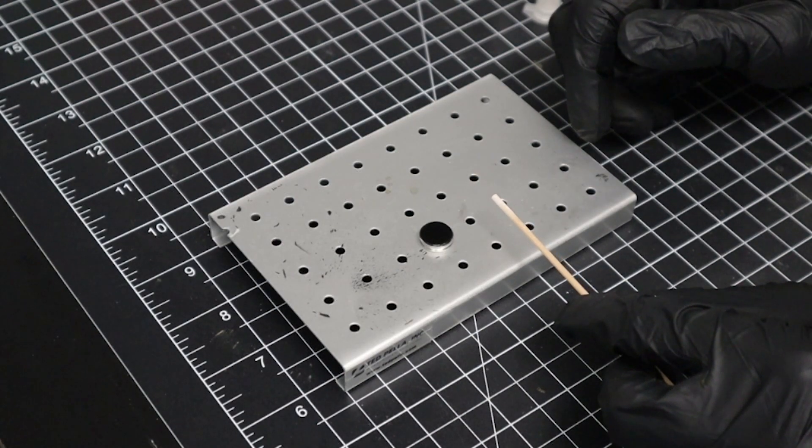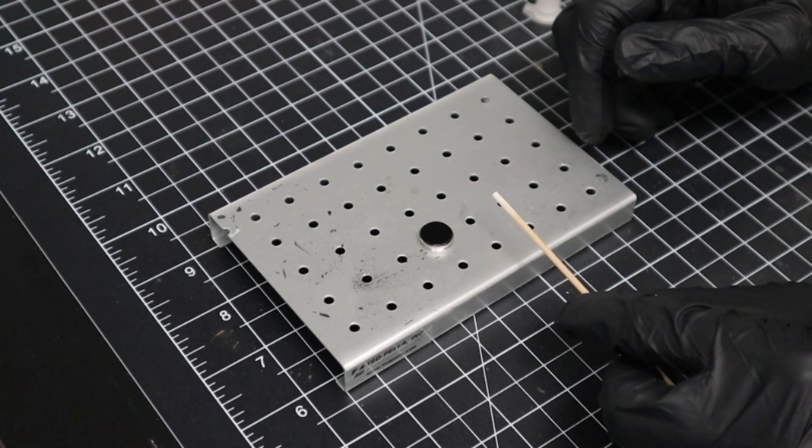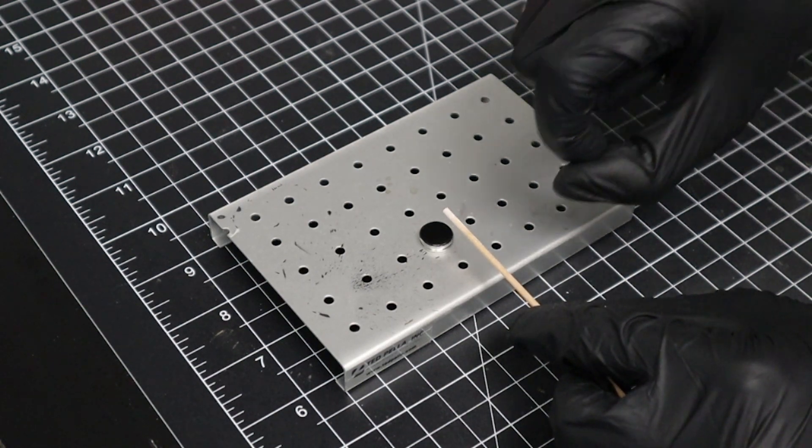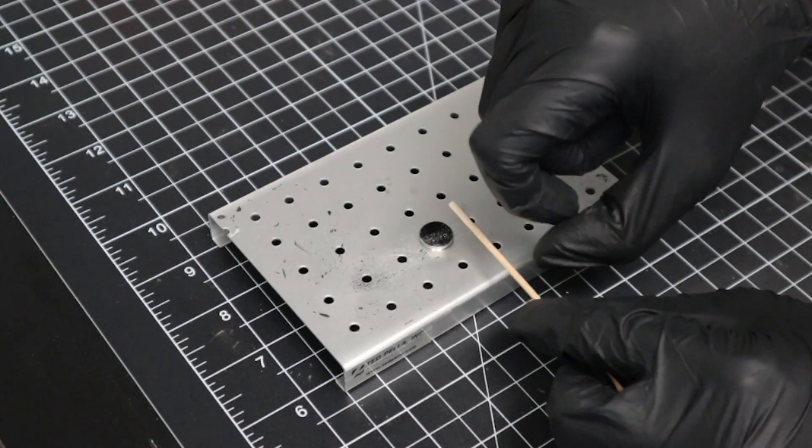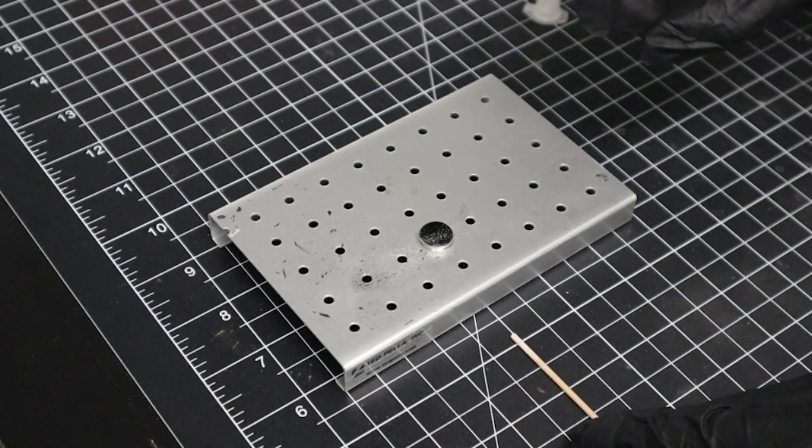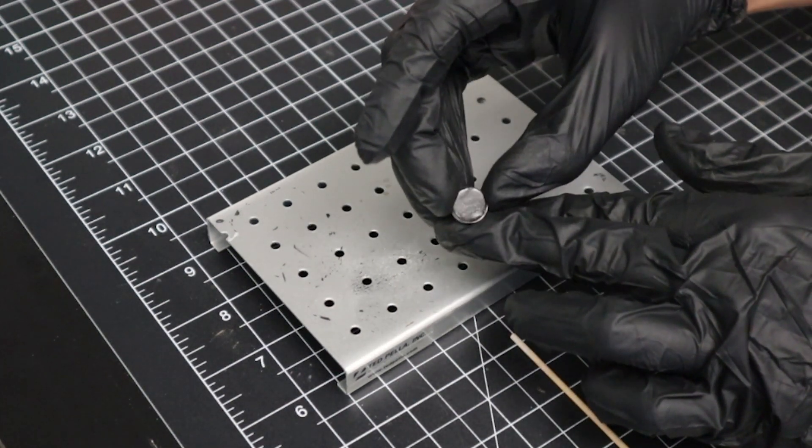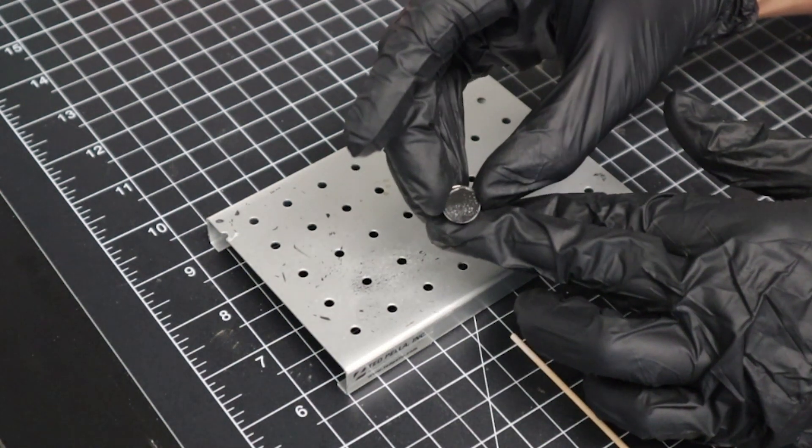Using our particle covered swab, we can then deposit the particles by hovering the swab over top of our sample stub, and then striking it with a quick flick. Applying such an abrupt force dislodges and aerosolizes the particles, resulting in an even distribution of particles on the stub.